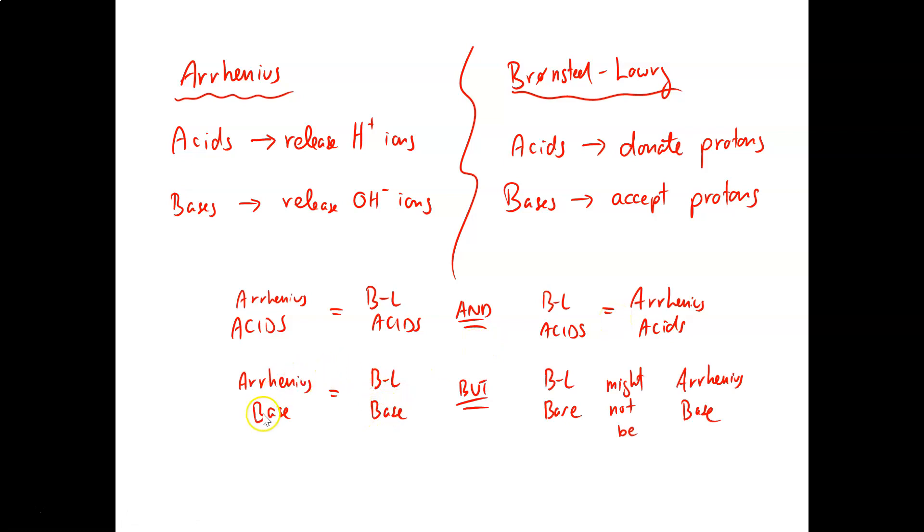However, while an Arrhenius base is also a Bronsted-Lowry base, a Bronsted-Lowry base might not be an Arrhenius base. You see, Arrhenius' definition for bases was very specific. A base must have a hydroxide ion in its chemical formula. Whereas the Bronsted-Lowry definition was a little more generic. What you see in the Venn diagram is that if you are an Arrhenius base, you do fall under the definition of a Bronsted-Lowry base. But if you are a Bronsted-Lowry base, you might not fall under the definition of an Arrhenius base. So be aware, an Arrhenius base will always be a Bronsted-Lowry base, but a Bronsted-Lowry base might not always be an Arrhenius base.